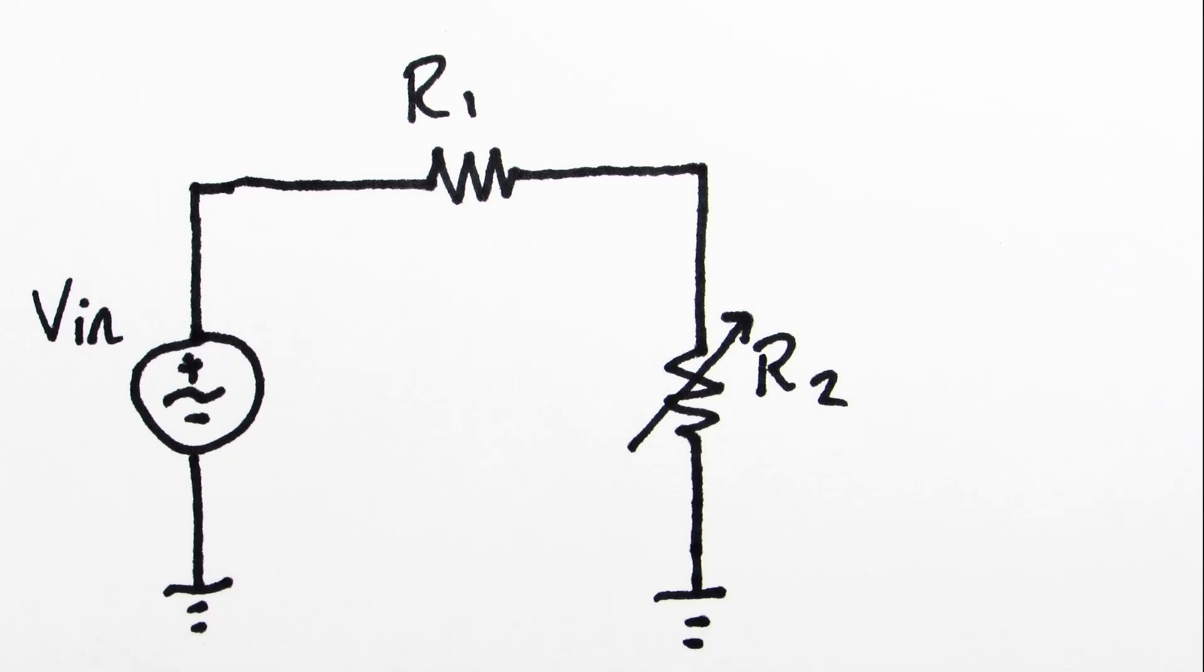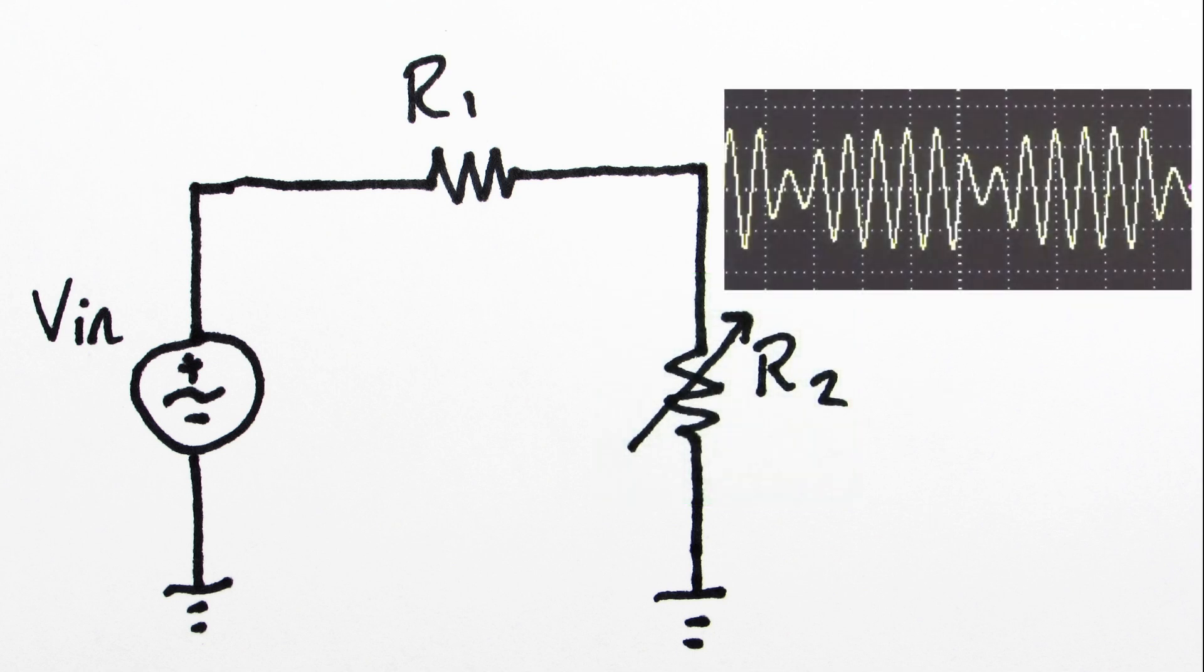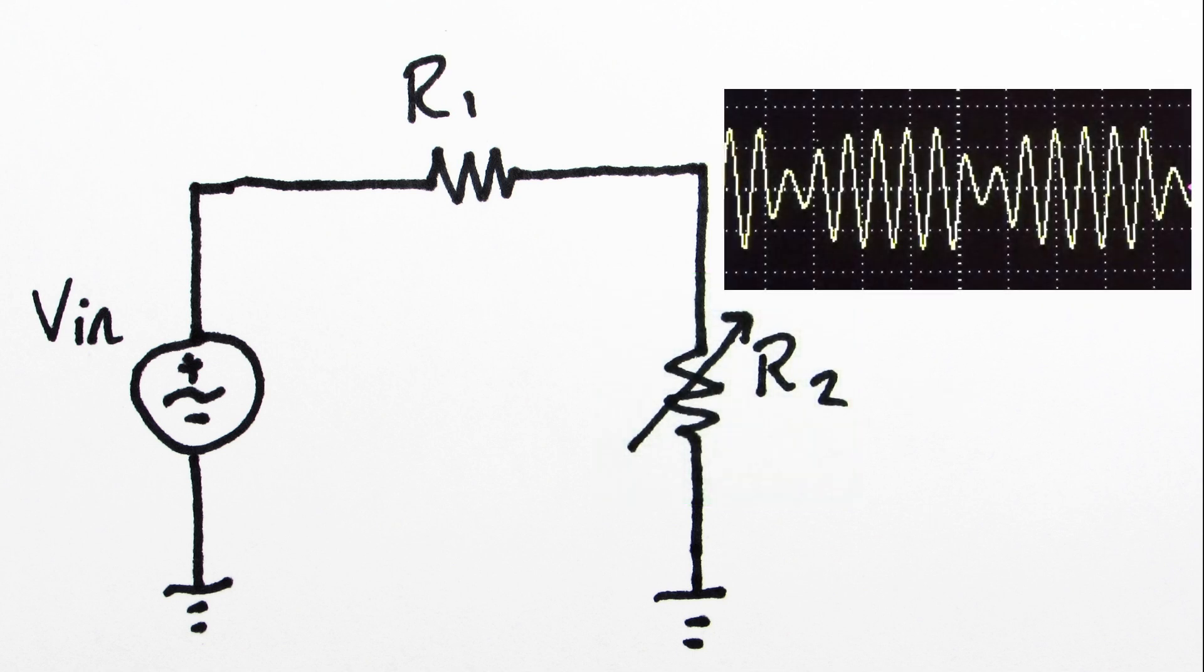The basic operating principle of the tremolo effect is very simple. We just want to vary the output amplitude in a controlled manner. We can do this by creating a voltage divider and varying R2, the resistor that's in parallel with our output. Here's an output waveform of a tremolo pedal. Notice how the amplitude varies in a controlled manner, is periodic, and the amplitude goes from high to low with a smooth transition. This is what we're going for in our design.